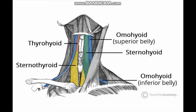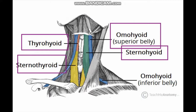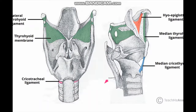The infrahyoid muscles include the thyrohyoid, omohyoid, sternohyoid, and sternothyroid. This bluish one is the omohyoid superior belly, behind the sternohyoid is the inferior belly of the omohyoid, this greenish one is the sternohyoid, this brownish one is the thyrohyoid, and this yellowish one is the sternothyroid.